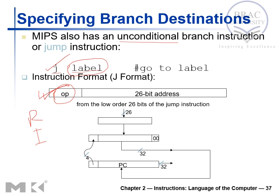From this 26-bit address we need to generate a 32-bit target address. Let's take an example: J 1024. The value 1024, according to the format, goes into the 26-bit address field, which means 1024 will be converted into its 26-bit binary representation. Looking at the diagram, 1024 in binary would appear in this field — just assume this is the 26-bit representation of 1024.